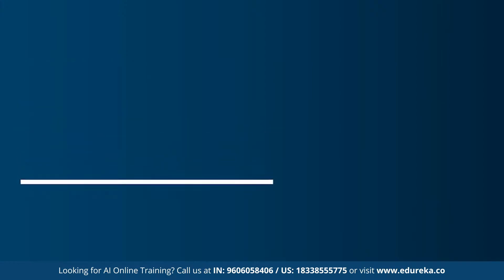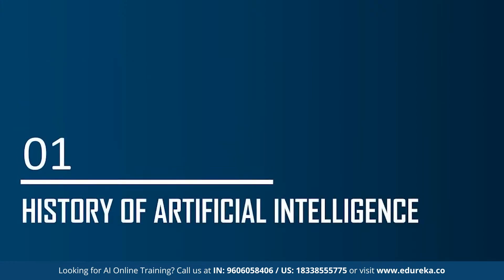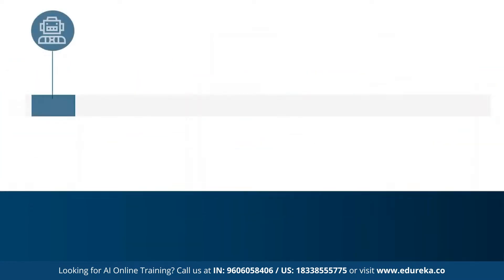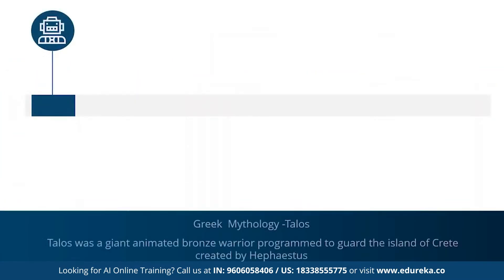Let's get started with the first topic: the history of artificial intelligence. The concept of AI goes back to the classical ages. Under Greek mythology, the concept of machines and mechanical men were well thought of. An example is Talos — a giant animated bronze warrior who was programmed to guard the island of Crete. Now let's get back to the 19th century.